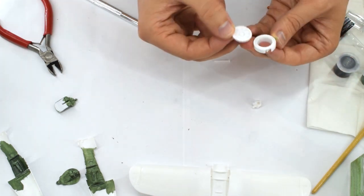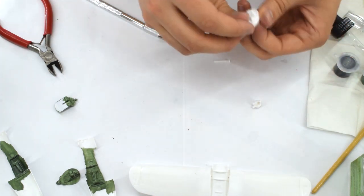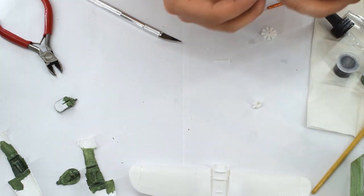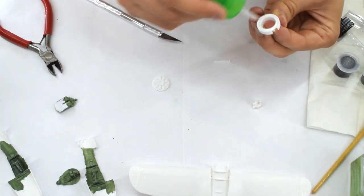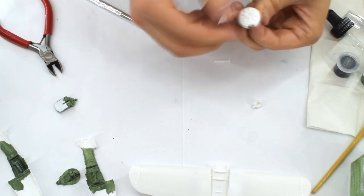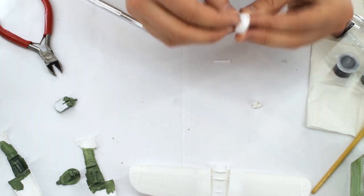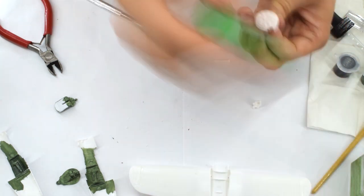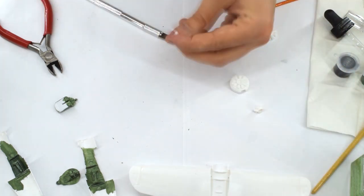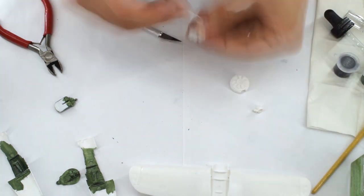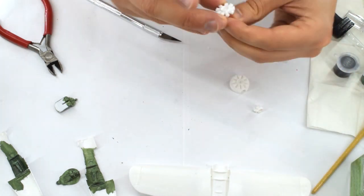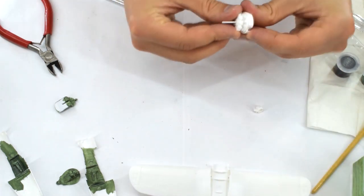Next, I started working on the engine assembly. This builds up in a series of layers, starting with the rear firewall, then the two layers of cylinders. It's worth noting that the propeller is designed to be able to spin freely, so be careful with that cement. The mounting pin for the propeller is inserted into one of the layers but not glued in place.